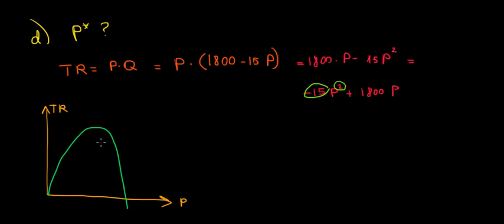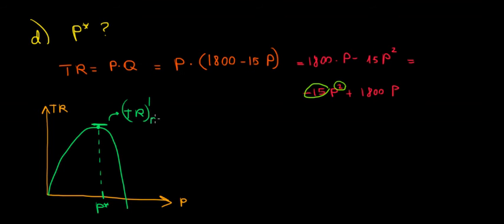That means we have a peak of total revenues — we can reach a maximum amount — and that happens at the revenue-maximizing price. At that peak, we can see that the slope is flat, which means the derivative of total revenue with respect to price must be equal to zero.